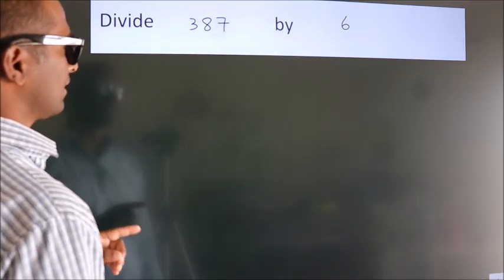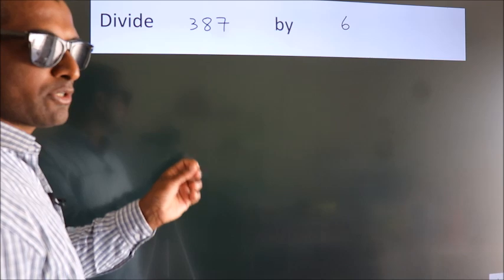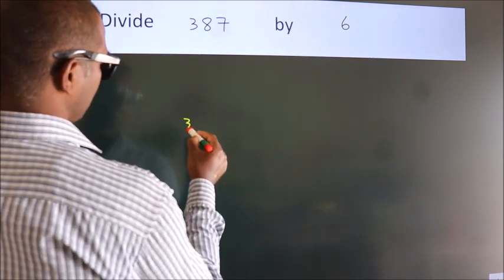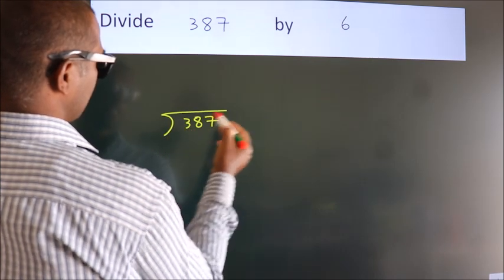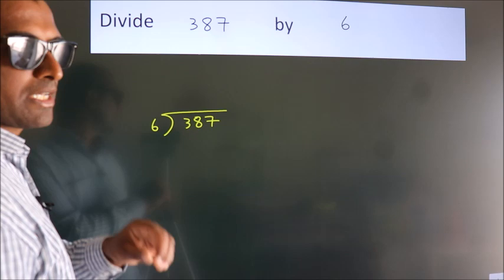Divide 387 by 6. To do this division, we should frame it in this way. 387 here, 6 here. This is your step 1.